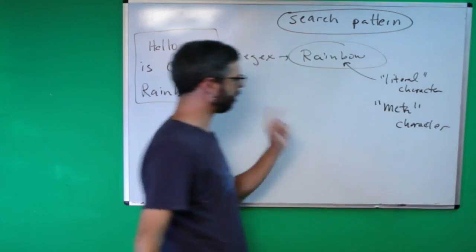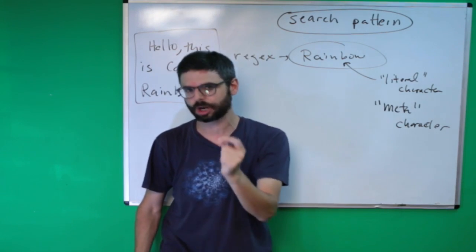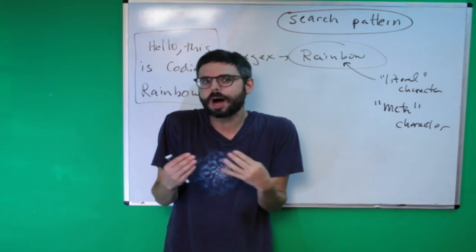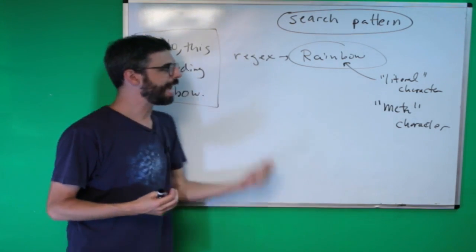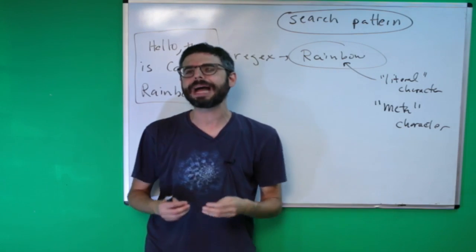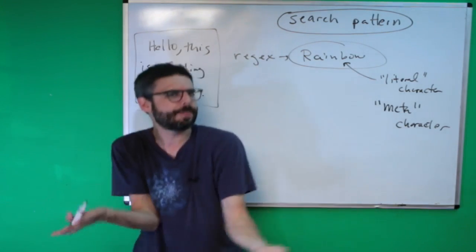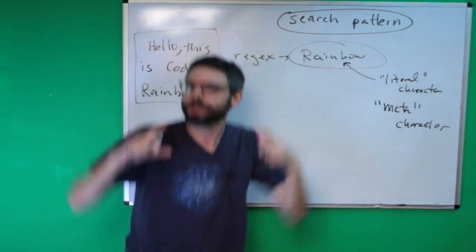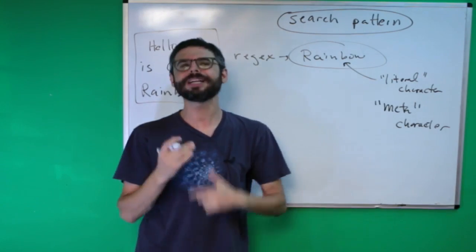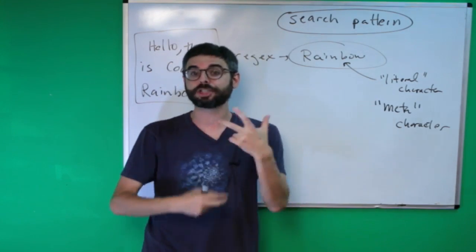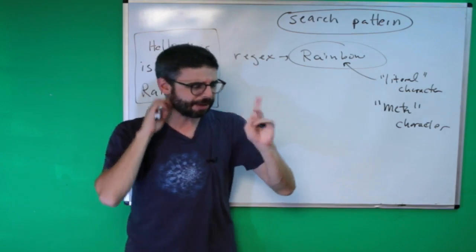A meta character is a character that does not indicate a single literal character, but indicates a more generalized pattern. For example, you could say: match capital R followed by any possible vowel, followed by any possible consonant, followed by any uppercase character, followed by any digit, followed by any whitespace — creating increasingly generic patterns that match different kinds of text.